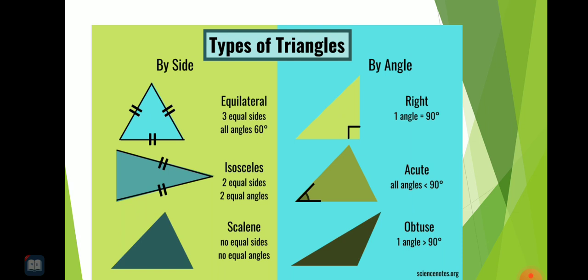Then in the figure, in this picture you can see that by side there are three types of triangles and according to by angle, there are three types of triangles.